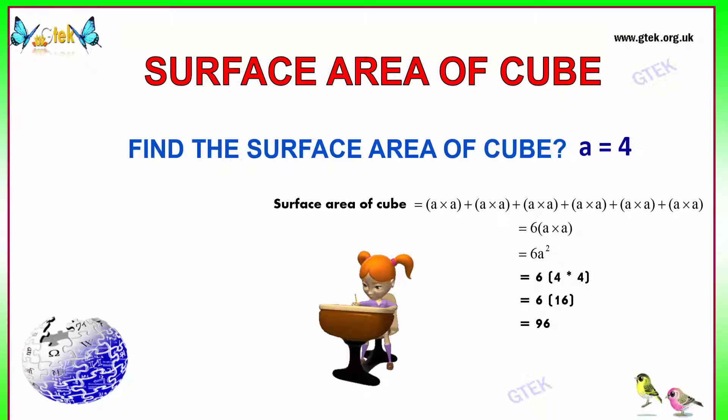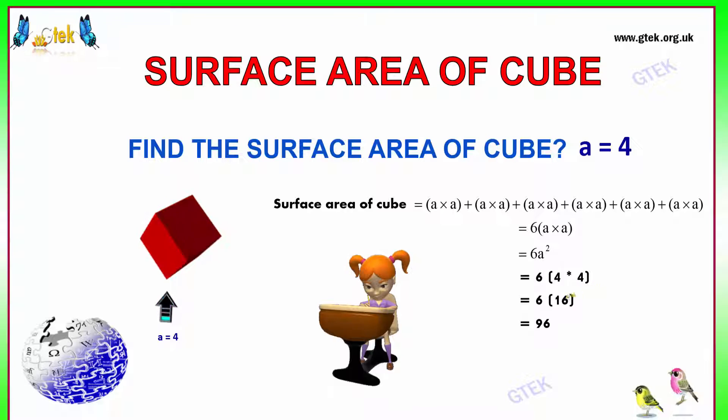As I told, the surface area of the cube is 6A square. We got that A is equal to 4, so 6 into 4 into 4. That's 6 into 16, so the answer is 96. The surface area of this cube is 96.